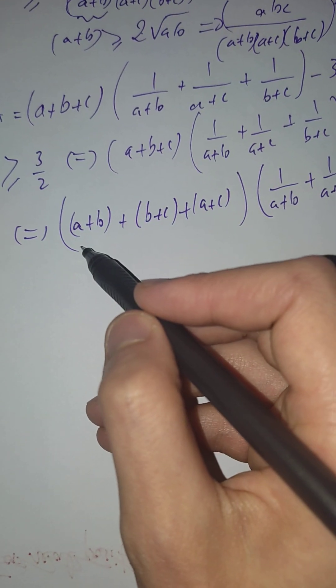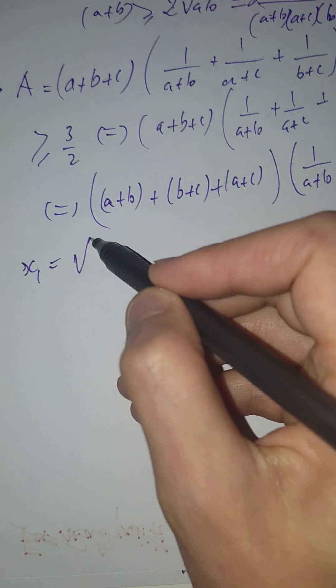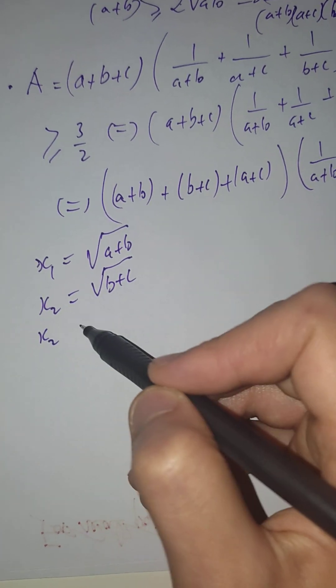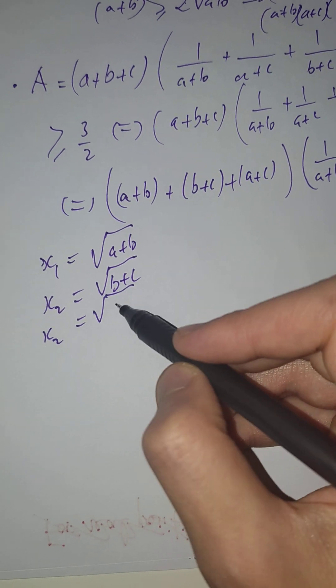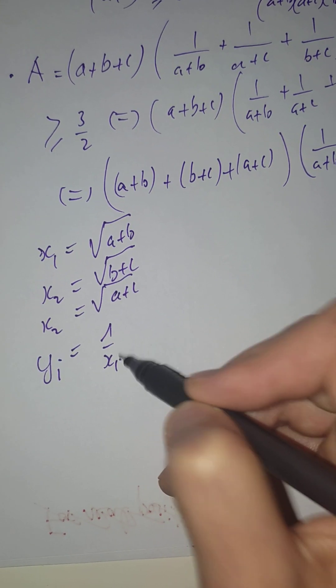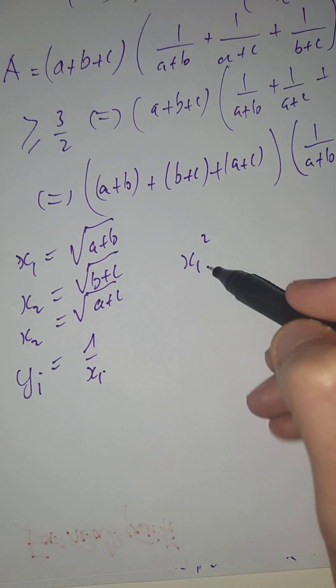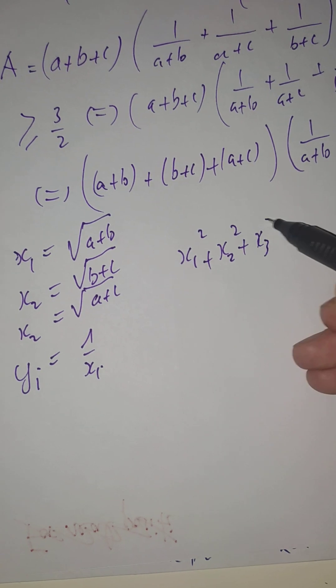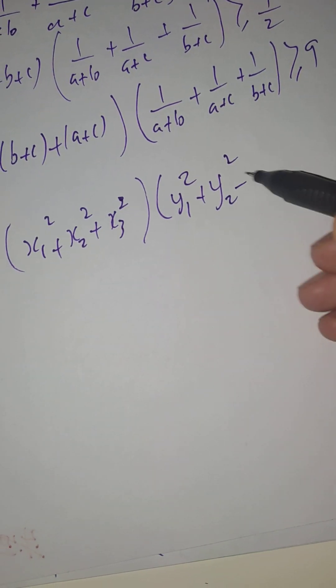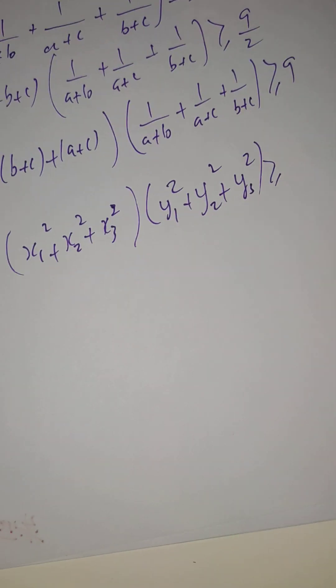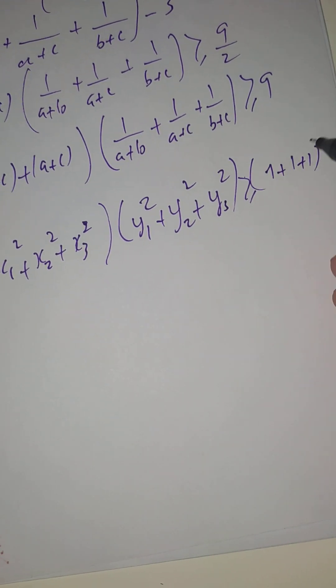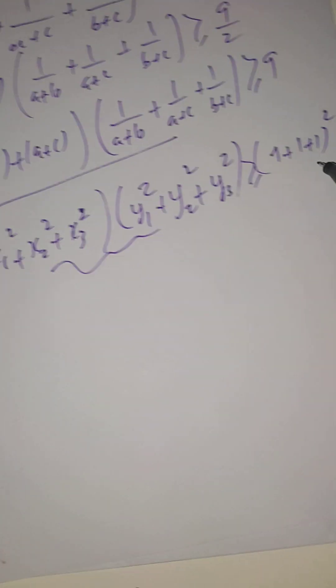Use Cauchy-Schwarz. So use this: let x1 equal square root of a plus b, x2 equal square root of b plus c, x3 equal square root of a plus c, and yi equal 1 over xi. For Cauchy-Schwarz, what we get is that (x1 squared plus x2 squared plus x3 squared) multiplied by (y1 squared plus y2 squared plus y3 squared) is bigger than the sum of products. The sum of product is (1 plus 1 plus 1) squared. And this is exactly what we have here. And this is 9.